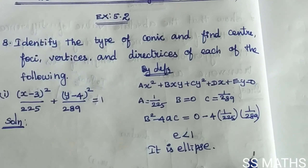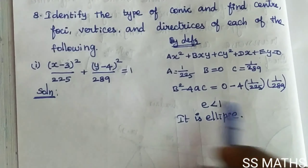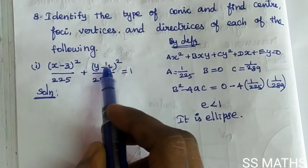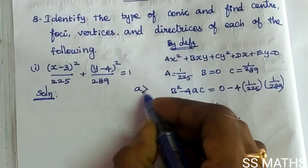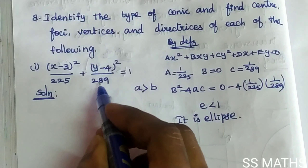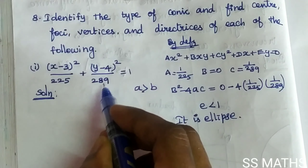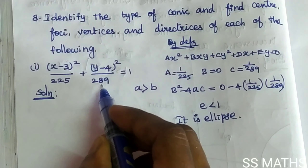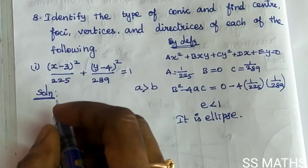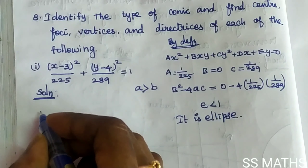Type of conic found by definition. Next, compare with the standard form x²/a² + y²/b² = 1. Check that a is greater than b — the biggest denominator is 289, so a² = 289 is under y². Therefore, the major axis is along the y-axis.